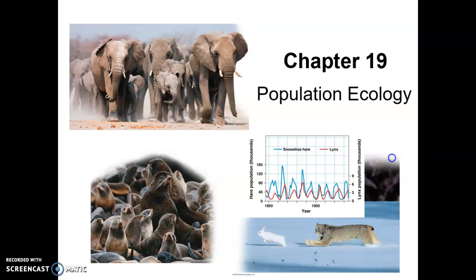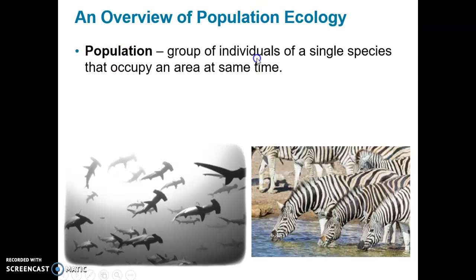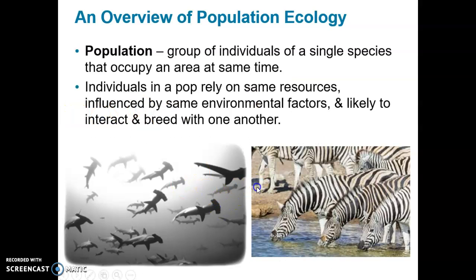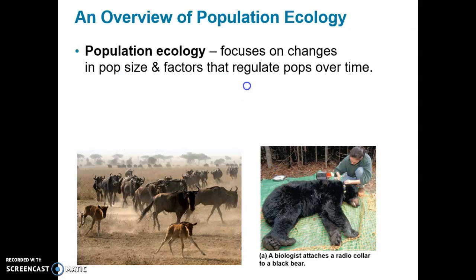Chapter 19: population ecology. A population is a group of individuals of the same species that occupy a particular area or habitat at a particular time. Individuals in a population rely on the same resources, are influenced by the same or similar environmental factors, and are likely to interbreed and interact with each other. Their requirements are totally based on their biology, whether they're aquatic or terrestrial.